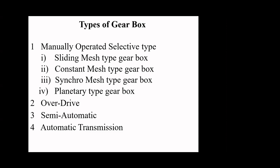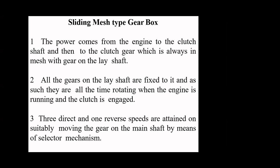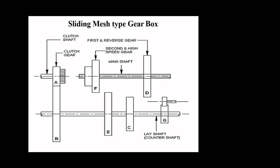Now we should see what the sliding mesh type of gearbox is. This is one of the manually operated types of gearbox. With the help of a figure, you can see the lay shaft, and gears are fixed on the main shaft. The clutch gear and clutch shaft are visible, and different types of gears can be seen — first and reverse gear, third and fourth gear, and second gear.